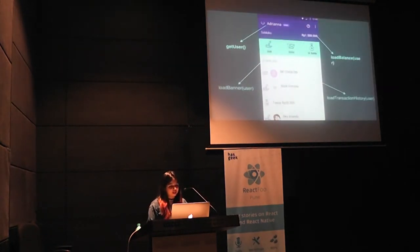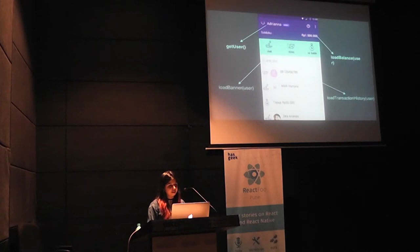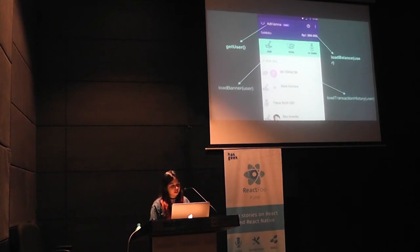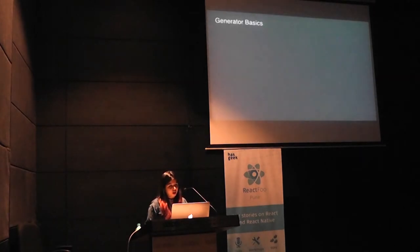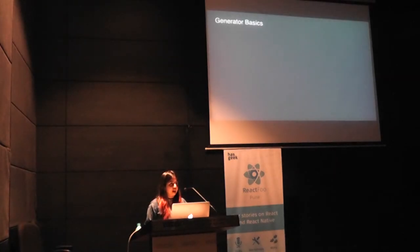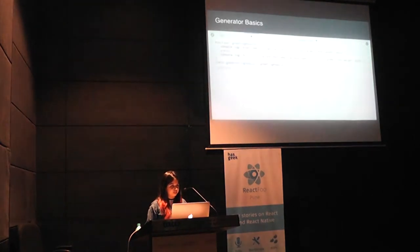Back to the problem: I had to create the dashboard, which required hitting get user, load balance, load banner, and transaction details APIs. First it needed get user, and all the other APIs were depending on the get user response. Since Saga uses generators, I had to learn the generator basics first.